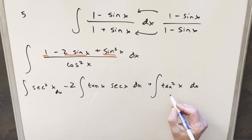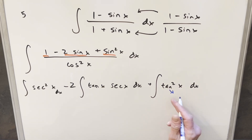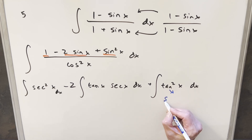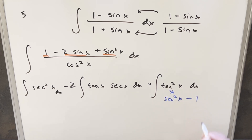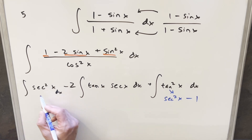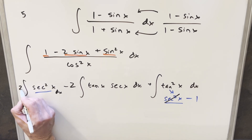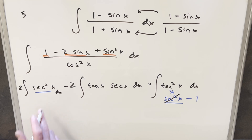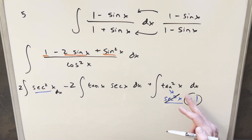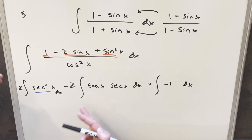For tan squared x, I can break that up using an identity: tan squared x equals secant squared x minus 1. Now if I break this into two integrals, we already have secant squared x in the first integral, so I'll combine them — bringing a 2 in front to show we have two copies of that integral — and the remaining piece is just integrating minus 1.